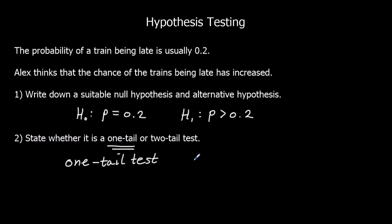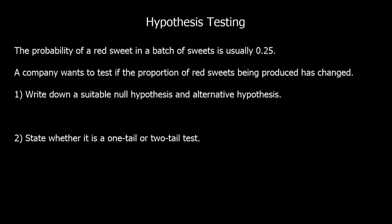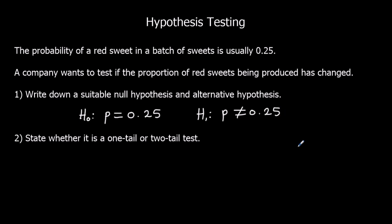If we were looking at extreme values on both sides — so if it was either bigger or smaller — that would be two tails. Here's another similar question. This time the probability of a red sweet in a batch of sweets is usually 0.25, so our null hypothesis is that the probability equals 0.25. The company wants to test if the proportion of red sweets being produced has changed, so we don't care if it's increased or decreased. Our alternative hypothesis is that the probability is not equal to 0.25, and that makes it a two-tail test.